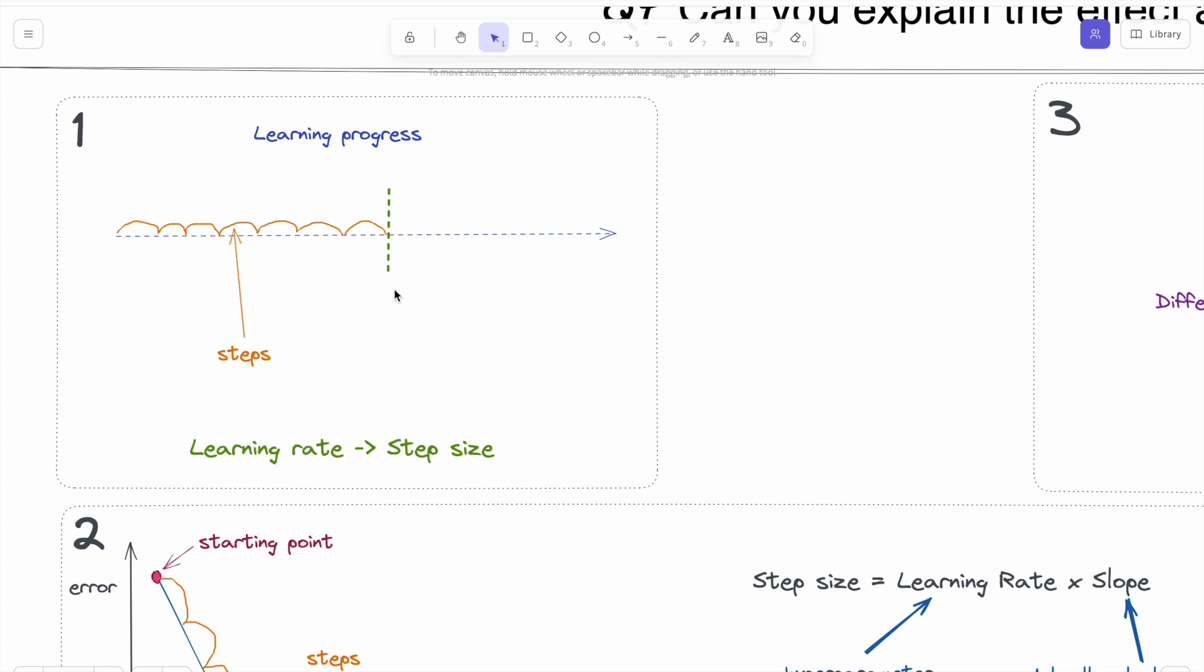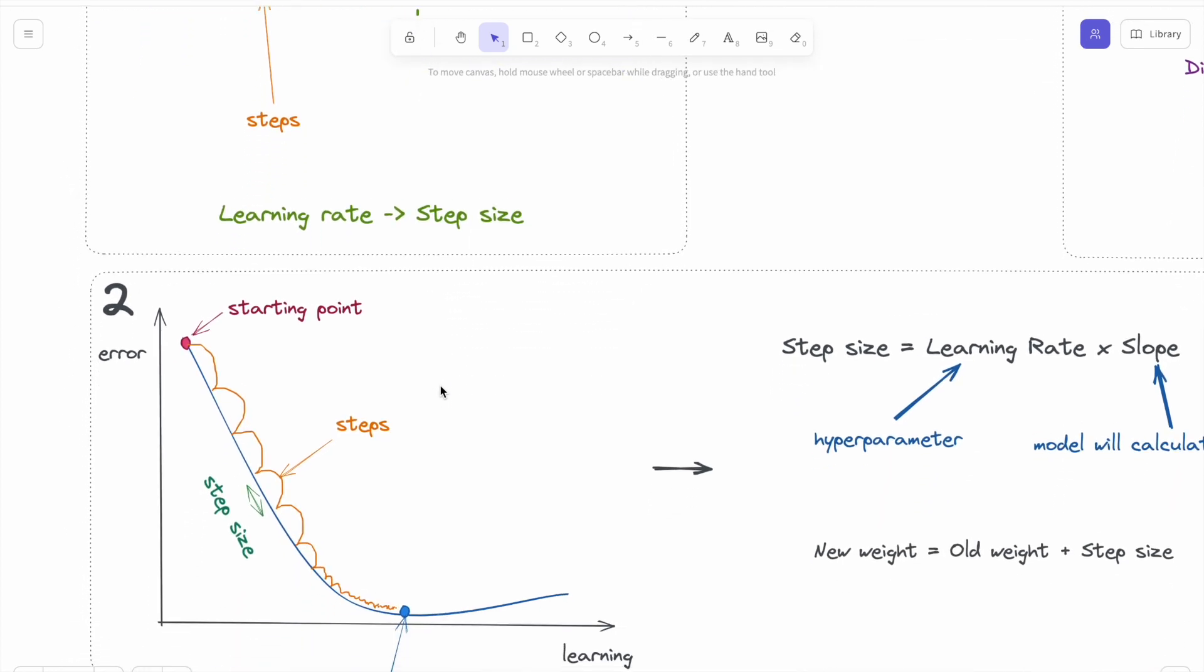The first thing you should know about learning rate is that learning rate affects the step size in this learning progress. But how do we understand this step size and learning rate relationship?